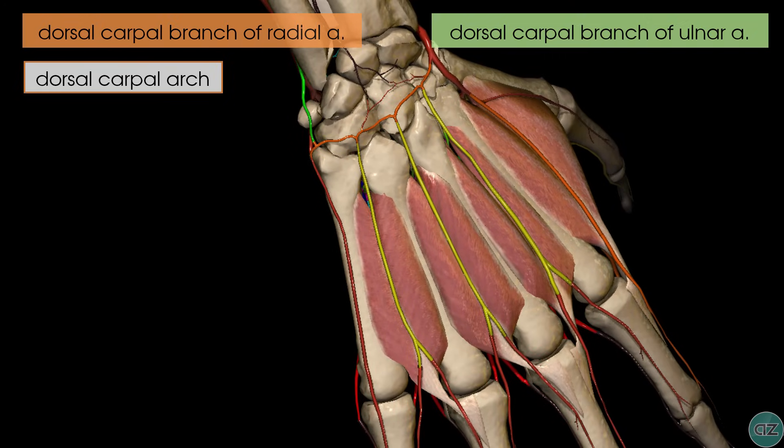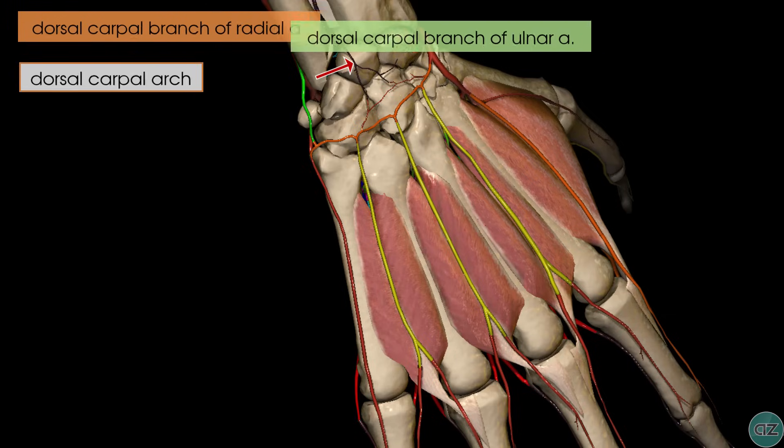In addition, you can see arteries coming off the posterior interosseous artery which anastomose with the dorsal carpal arch.